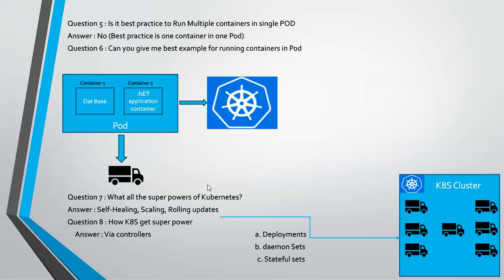What are the superpowers of Kubernetes? The superpowers are self-healing, scaling, and rolling updates. Self-healing means whenever a pod — which may have two containers — goes down, the Kubernetes cluster will automatically heal that issue. The failed pod will be replaced with a live pod automatically. It will replace the defective pod with a healthy one — that is self-healing.